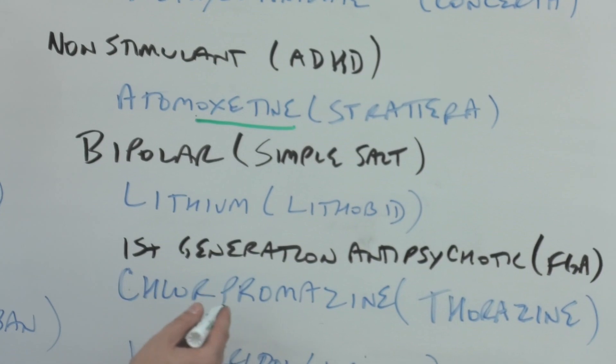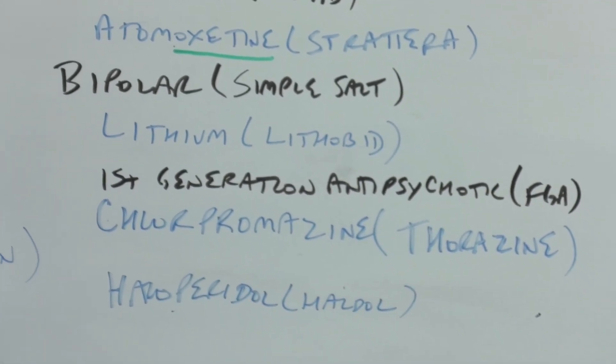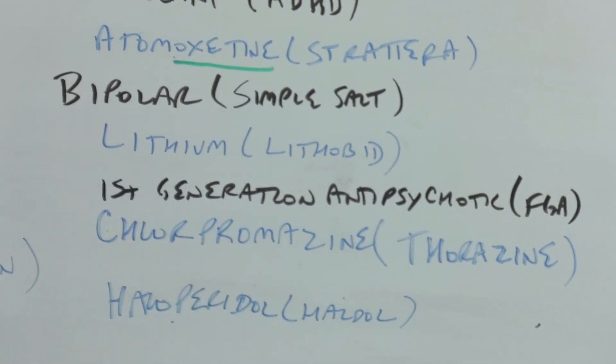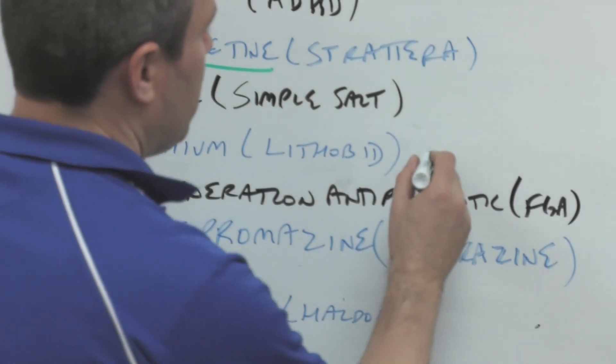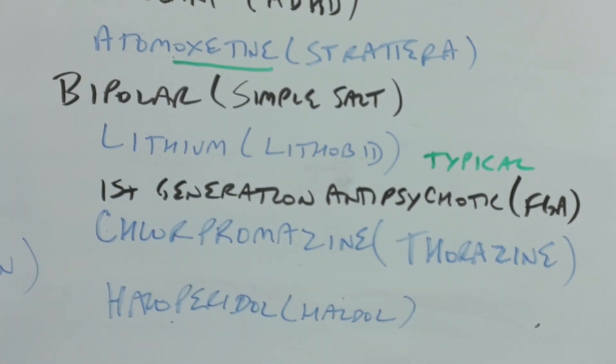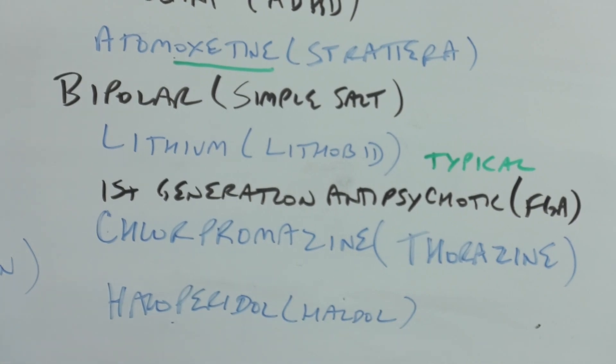Bipolar is a simple salt: lithium and Lithobid. Bid is Latin for twice daily, so lithium was taken twice daily in this particular dose. First generation antipsychotics - there's also a term called typical antipsychotics. Chlorpromazine was the first one, it's Thorazine, and this is low potency. Low potency drugs tend to cause sedation. Low potency just means you need 100 milligrams to get the same thing out of chlorpromazine as 2 milligrams of haloperidol, which is high potency.